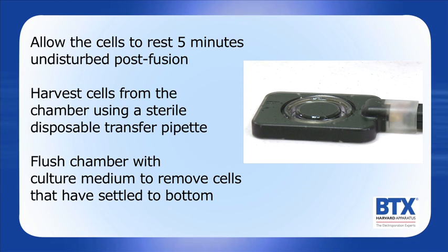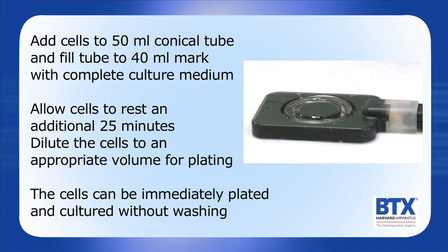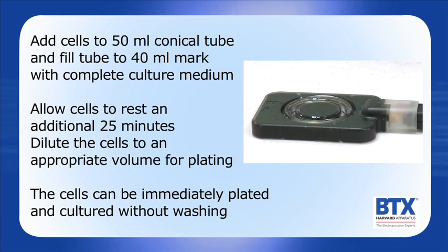Harvest cells from the chamber using a sterile disposable transfer pipette. Flush the chamber with culture medium to remove cells that have settled to the bottom. Add cells to a 50 mL conical tube and fill the tube to the 40 mL mark with complete culture medium. Allow cells to rest for an additional 25 minutes. Dilute the cells to an appropriate volume for plating. The cells can be immediately plated and cultured without washing.